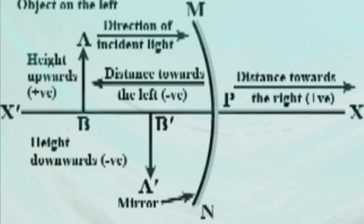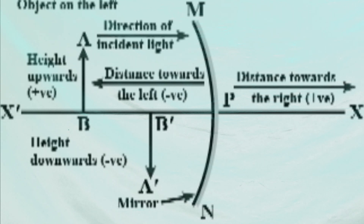The first topic is sign convention, which we have already studied in Class 10. Let's do a quick revision. There are just four points: left, right, up, and down. For better understanding we can use the Cartesian coordinate system — just look at the graph sheet. The distance measured in the same direction as the incident light is taken as positive, meaning the right side of the x-axis.